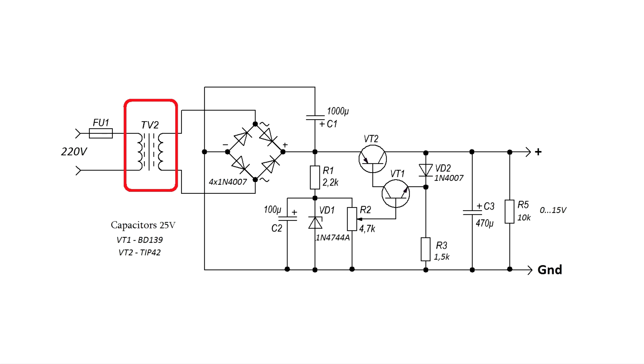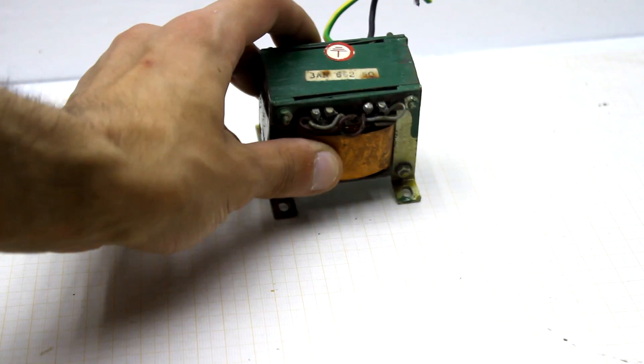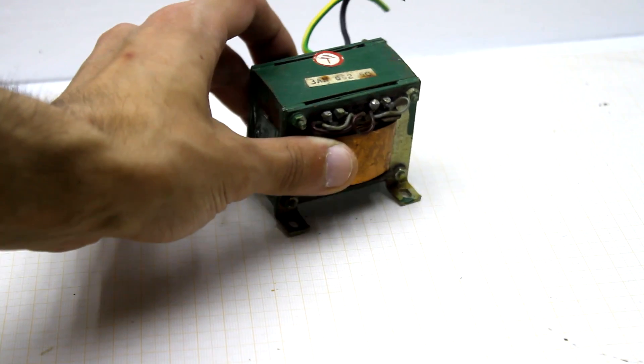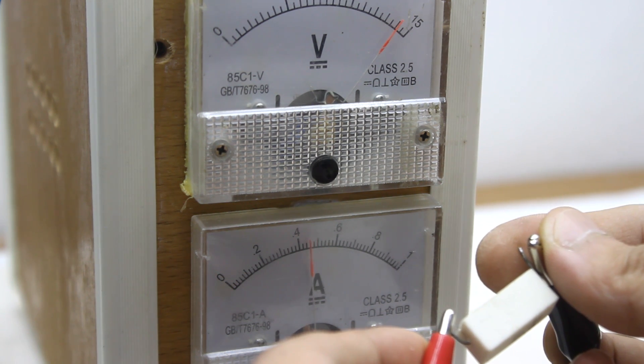The transformer should provide a voltage of 15V and a current of 1A on the secondary winding. But our hand-on-hand transformer only gives 500mA, so the unit is weaker than originally planned.